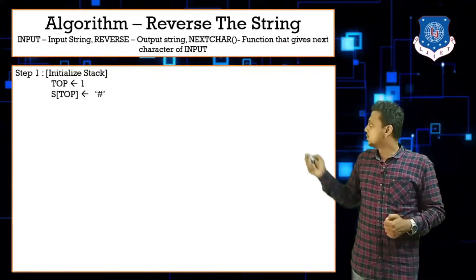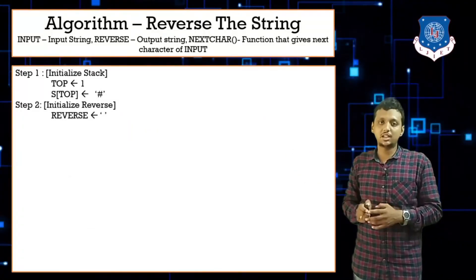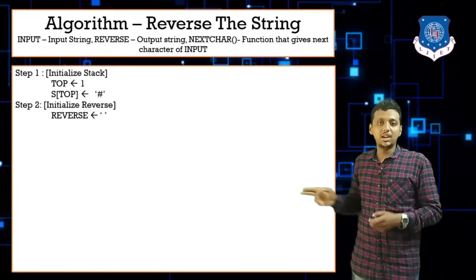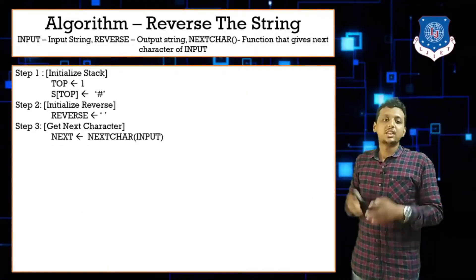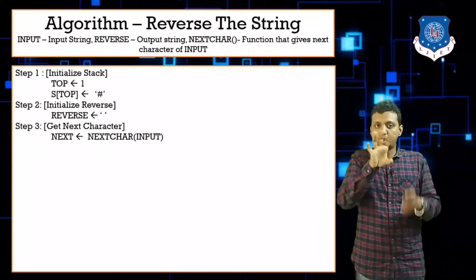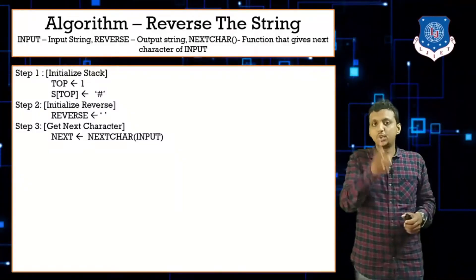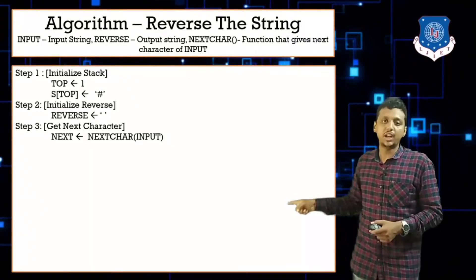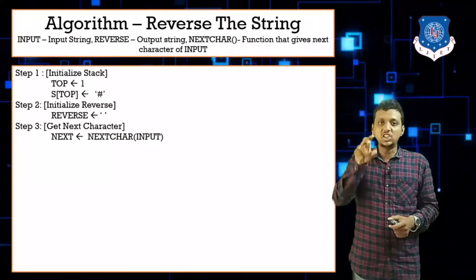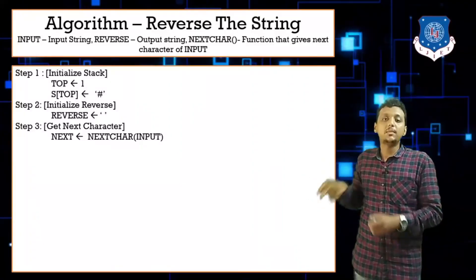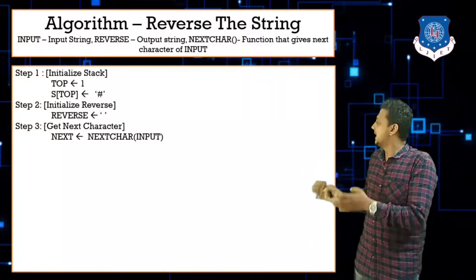Get the first character: next = next_character(input). Then repeat while next ≠ hash: push next onto the stack, then call next = next_character(input) again to get the following character. This loop extracts one character at a time from the input string, pushing each into the stack until we reach the hash sentinel.